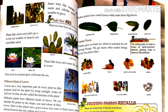Plants like cactus and palm grow in hot weather and need little water. Plants like lotus and water lily grow in water. Trees such as coconut grow well near the sea. Leaves are a very important part of every plant, as they prepare food for the plant by using sunlight, water, air, and soil. They are also called the kitchen of the plants.